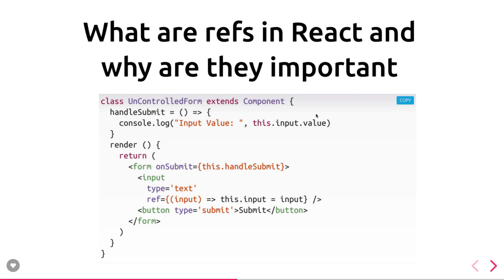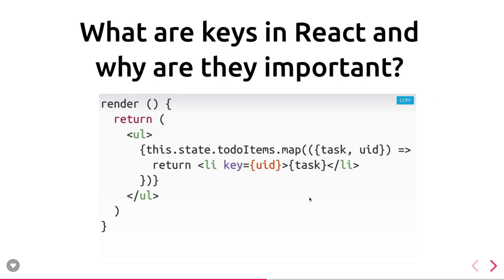Refs are used to capture values from the DOM — DOM fields like text fields and text areas. We provide a ref to an element and that reference will capture the value from that input. This is a short way to capture whatever the user types in an input text field. You can also get the value using this.refs.refName.getDOMNode().value. Refs are created on form fields to capture the values of those fields.